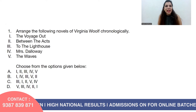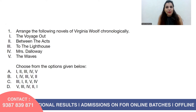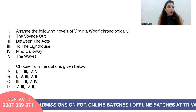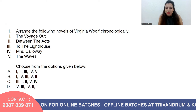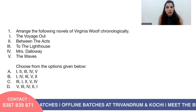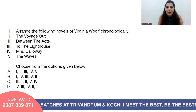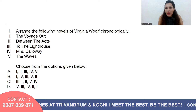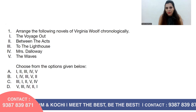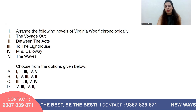Question number one: Arrange the following novels of Virginia Woolf chronologically. The novels are: one, The Voyage Out; two, Between the Acts; three, To the Lighthouse; four, Mrs Dalloway; and five, The Waves. Choose from the options given below. Can you arrange these novels by Virginia Woolf chronologically?